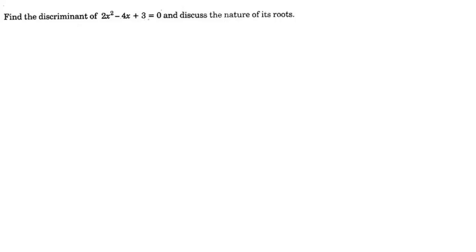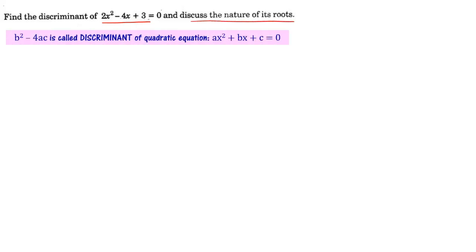Find the discriminant of 2x² minus 4x plus 3 equal to 0 and discuss the nature of its roots. b² minus 4ac is called the discriminant of the quadratic equation ax² plus bx plus c equal to 0. b² minus 4ac is the discriminant.